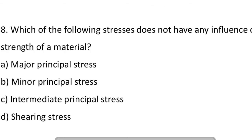Next question: which of the following stresses does not have any influence on the strength of the material? Option A: major principal stress. Option B: minor principal stress. Option C: intermediate principal stress. Option D: shearing stress. So the answer is C, intermediate principal stress.